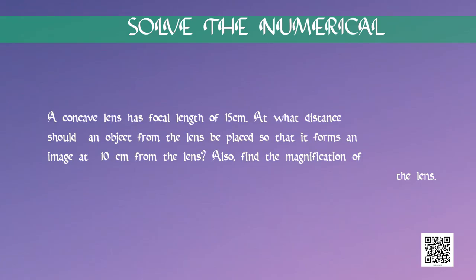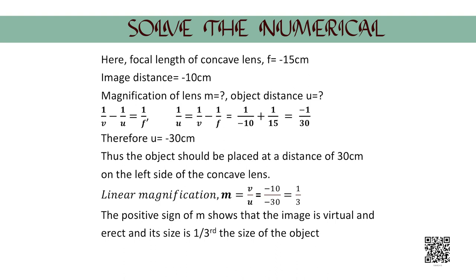Let us now try out a numerical on concave lenses. A concave lens has a focal length of 15 cm. At what distance should an object from the lens be placed so that it forms an image at 10 cm from the lens? Also find the magnification of the lens. Here, as we know, the focal length of a concave lens is negative, so f equals minus 15 cm.